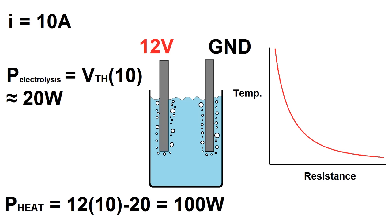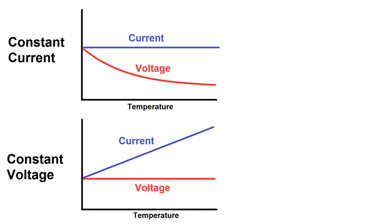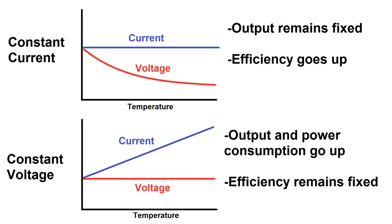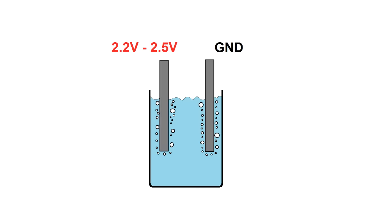Also, increasing the temperature increases conductivity of the solution, which would cause even more current draw and an eventual thermal runaway. This is why electrolysis is typically done with a constant current power supply rather than a constant voltage supply. If it is done with a constant voltage supply, designers typically try to keep the voltage as low as possible above the threshold to maximize efficiency and minimize heat. In industrial devices, usually each cell is somewhere between 2.2 to 2.5 volts.